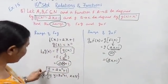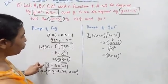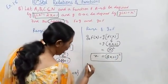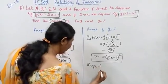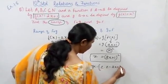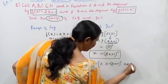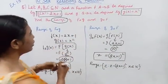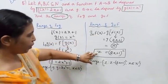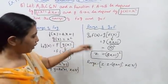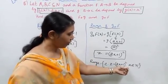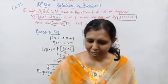Now f of g of x gives y, and g of f of x gives z. Writing the range using set builder formula: z such that z equal to (2x plus 1) the whole square, where x belongs to natural numbers. So the range of g of f is the set: z such that z equals (2x plus 1) whole square, where x belongs to N.